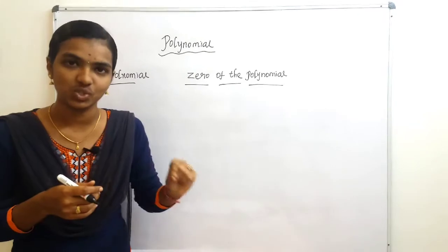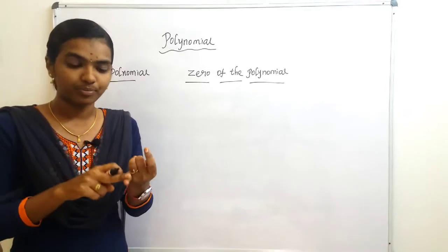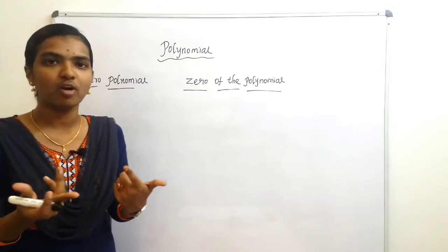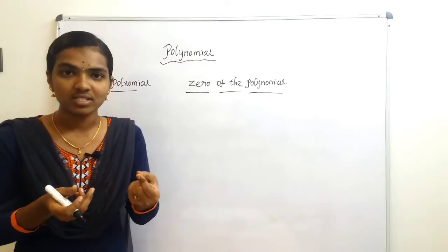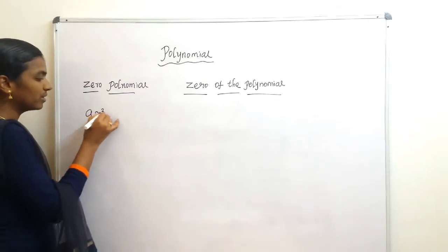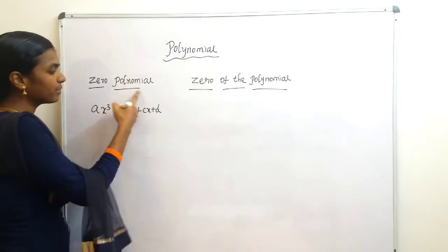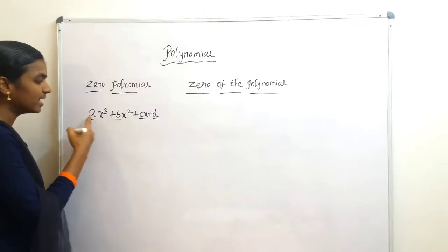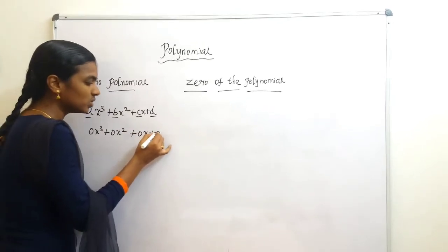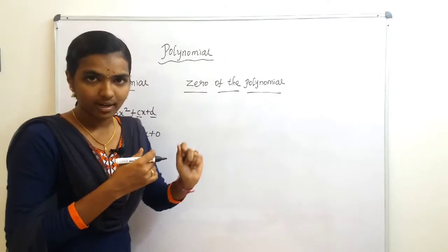Zero polynomial is nothing but a polynomial where all the constants are zero. You can take any polynomial — linear, quadratic, cubic, biquadratic, or even a fifth-power polynomial. For example, a cubic polynomial is generally ax³ + bx² + cx + d. In the zero polynomial, a, b, c, d are all zero, giving: 0x³ + 0x² + 0x + 0. That is the zero polynomial.